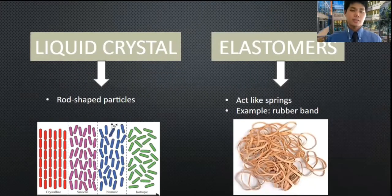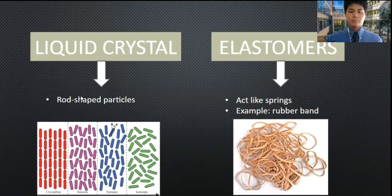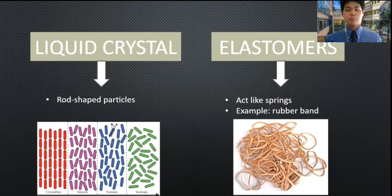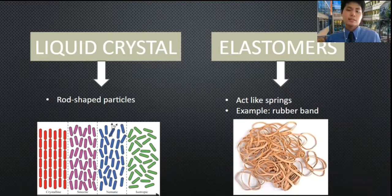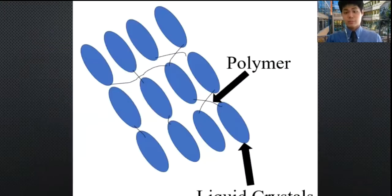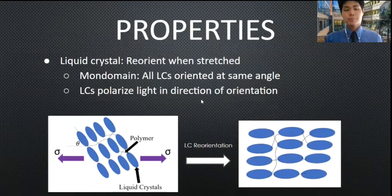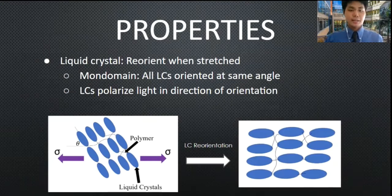So, what exactly is an LCE? There are two parts to it: the liquid crystal part and the elastomer part. Liquid crystals — just think of them as rod-shaped particles, like the picture on the bottom left. An elastomer is like a spring or a rubber band — it'll stretch when you apply some force to it, and it's also known as a polymer. When you embed a liquid crystal inside an elastomer, you get a liquid crystal elastomer, where you have rod-shaped liquid crystals with the polymer embedded on top of it. These come with interesting properties.